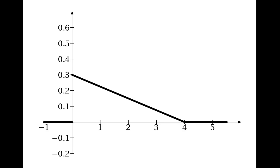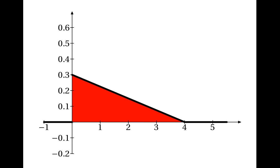What about this graph? Could this be a probability density function? We need to look at the total area and check if it's equal to 1, because the total area under a PDF must be 1. Well, this is just a triangle, so we find the total area using half base times height: half times 4 times 0.3, which is only 0.6. So this can't be a probability density function.